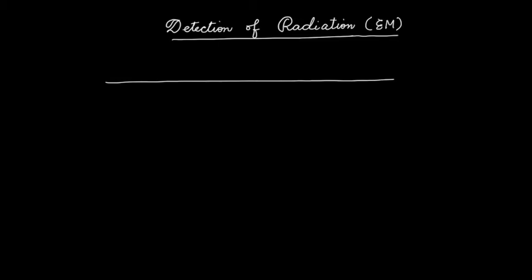Hello everybody. We have been discussing in the last five lectures how radiation encodes information about the source and the medium through which it passes. Now, this radiation finally reaches us — how will we detect it? Today onwards we will spend a few lectures to understand the basics of radiation detection. When I say radiation, I mean electromagnetic radiation, which spans many different wavelengths and frequencies. Let me write about the electromagnetic wave spectrum.